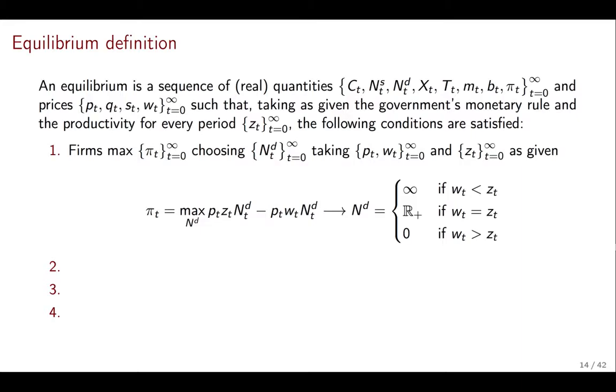Well, firms have to maximize their profits choosing labor demand, taking prices as given, as well as productivity. And as we saw, that value for profits is going to be given by this max, and it's going to depend on the labor demand given some prices. So as we mentioned before, if wages are lower than productivity, they want infinitely many workers. And so that means also infinite profit, and so on. So we've discussed this already.